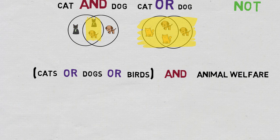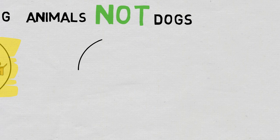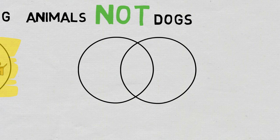Finally, you can use the Boolean operator NOT to exclude keywords from your search results. For example, if I want to retrieve information about animals, but not dogs, I would search like this: animals NOT dogs.